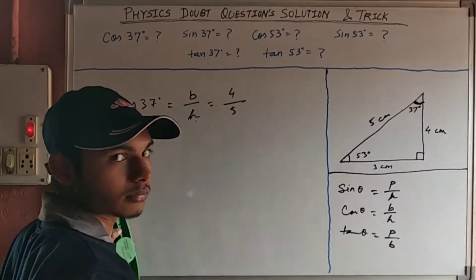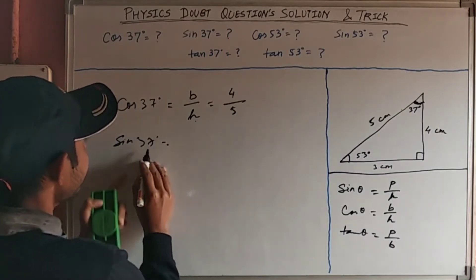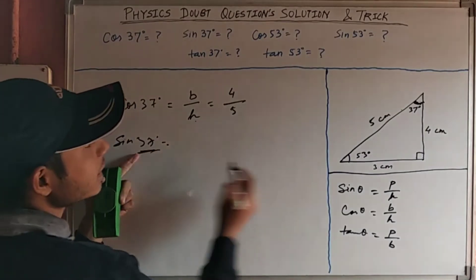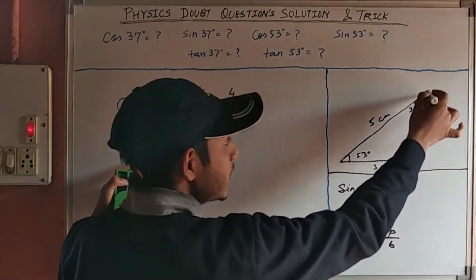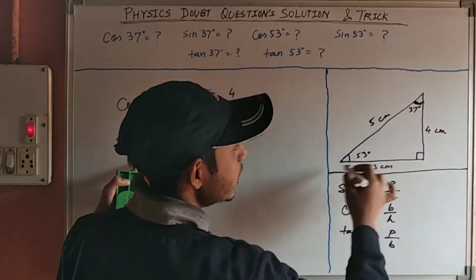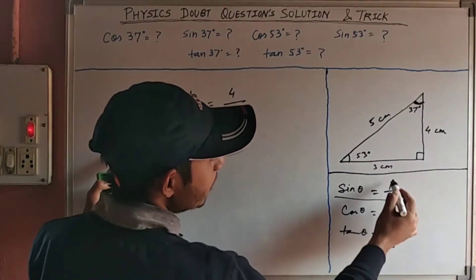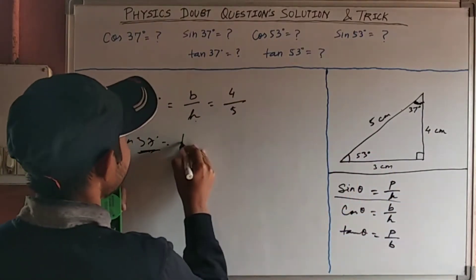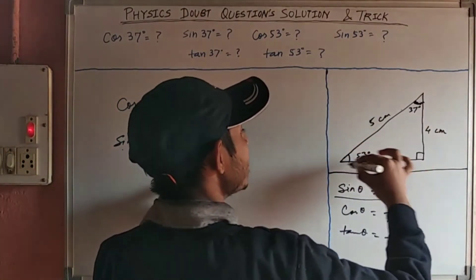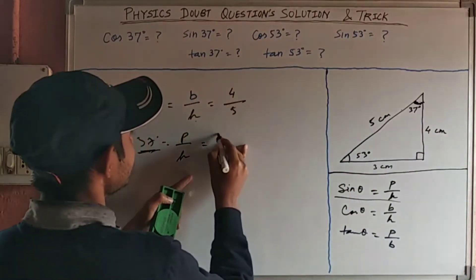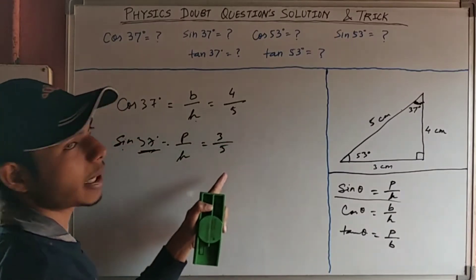Now sin 37°. We find this with respect to the 37° angle again. This is the base, this is the height, and this is the hypotenuse. sin θ = perpendicular / hypotenuse. With respect to this angle, the perpendicular is 3 and the hypotenuse is 5. Therefore sin 37° = 3/5.